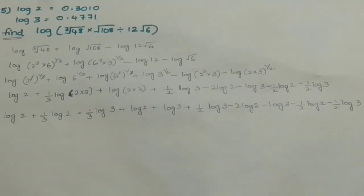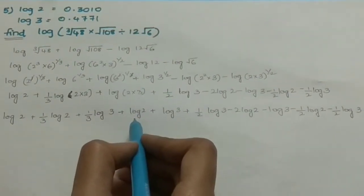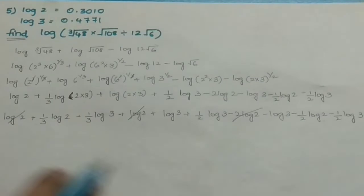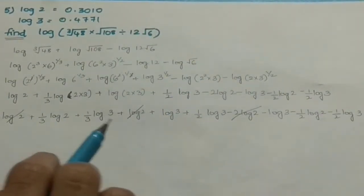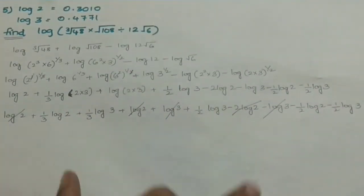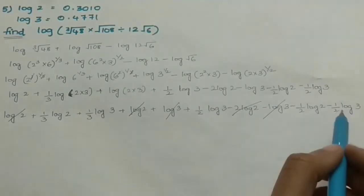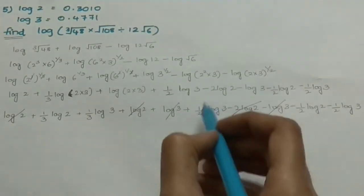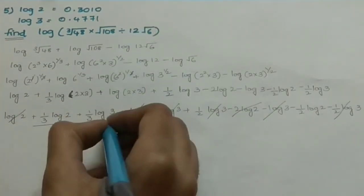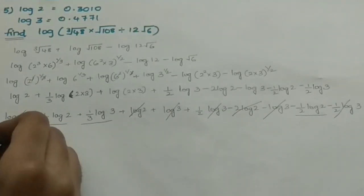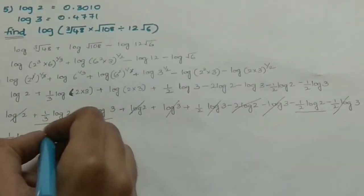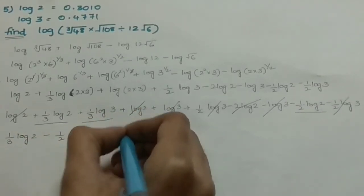Now arranging and cancelling: log 2 + log 2 = 2 log 2, and 2 log 2 − 2 log 2 = 0, so those cancel. Plus log 3 − log 3 = 0, cancel. Plus 1/2 log 3 − 1/2 log 3 = 0, cancel. The remaining terms are: 1/3 log 2 − 1/2 log 2 + 1/3 log 3.